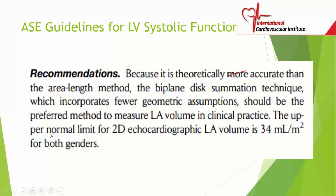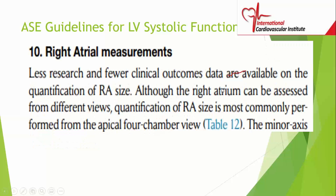The upper normal limit for 2D echo LA volume is 34 mls per meter squared for both genders. I still see people using 28 — it is not 28, it is 34. This is an index volume — mls per meter squared. The method to use is disc summation, not the area-length method.